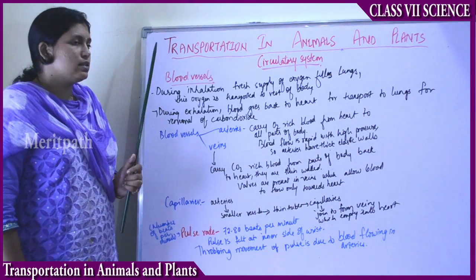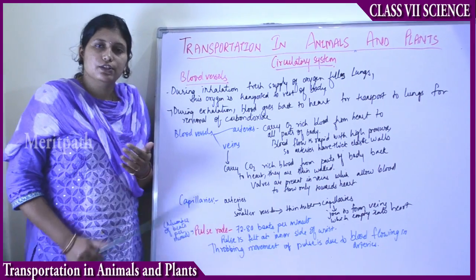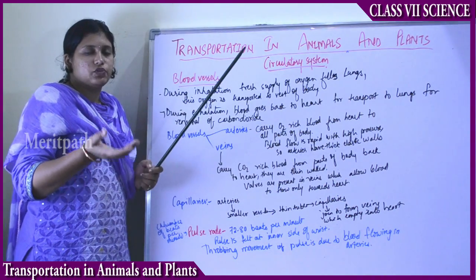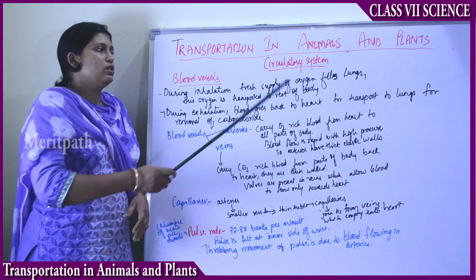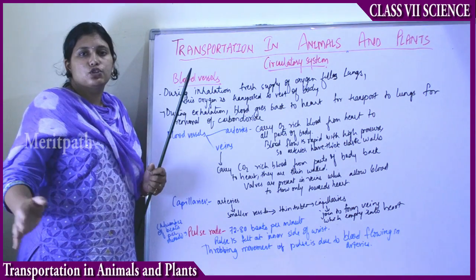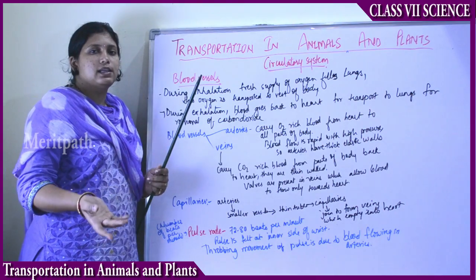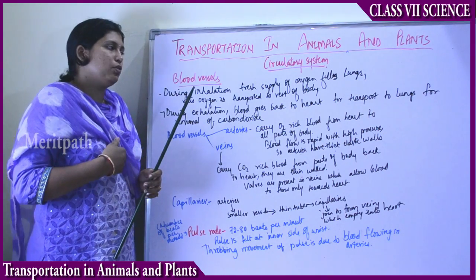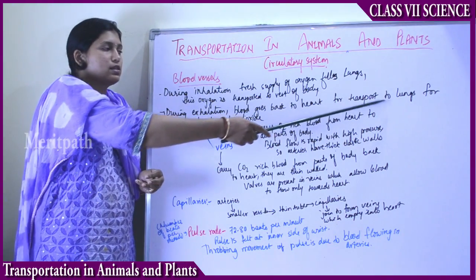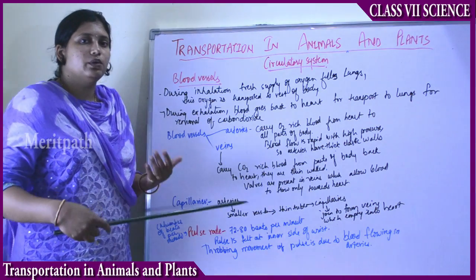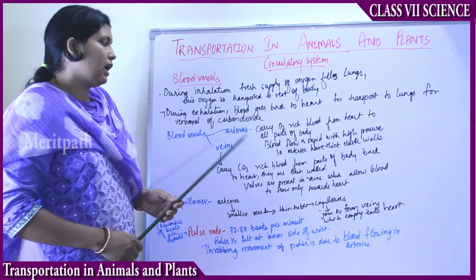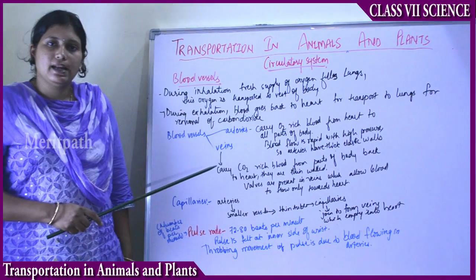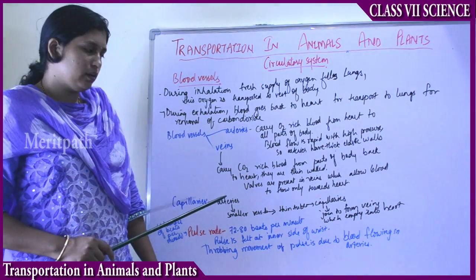The next component in the circulatory system is blood vessels. During inhalation, a fresh supply of oxygen fills the lungs and is then transported from the lungs to various parts of the body. During exhalation, blood goes back to the heart for transportation to the lungs and for removal of carbon dioxide. Blood vessels are of two main types: arteries and veins, and there is also a smaller category called capillaries.